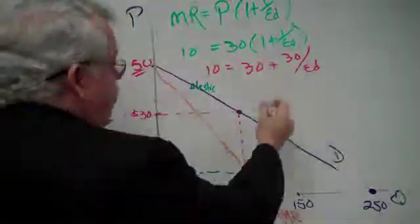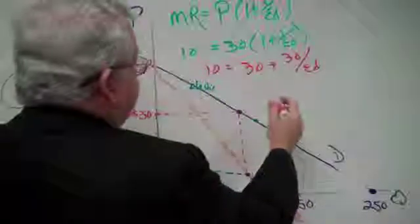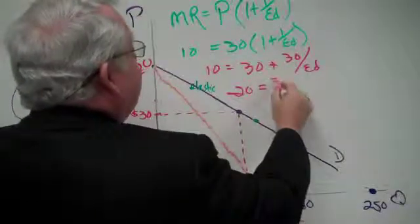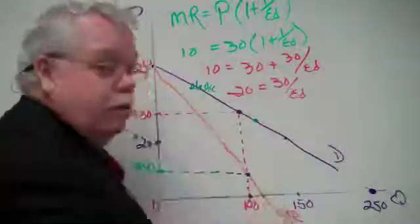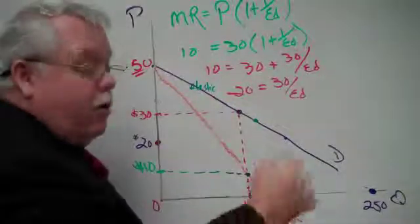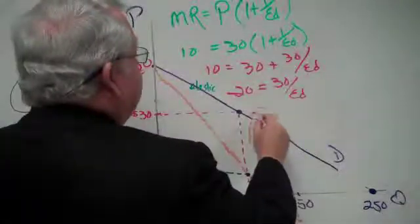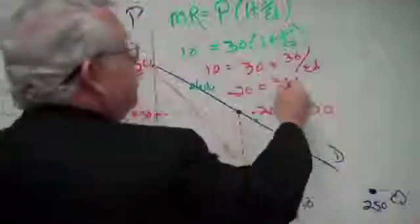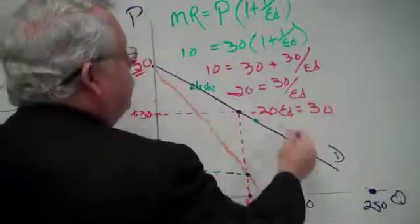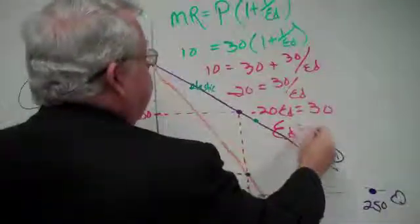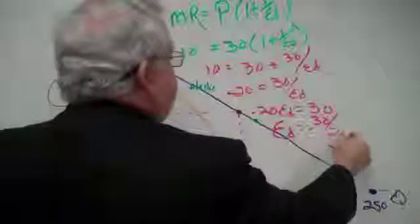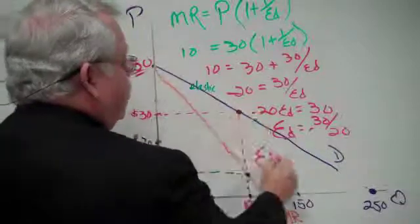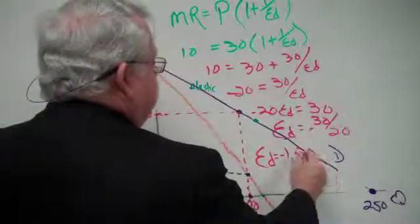Then what? Subtract. What do we want to do? Minus 20 equals 30 over the price elasticity of demand. Multiply both sides through by the price elasticity of demand. Minus 20 times ED equals 30, because multiplying over here cancels. And so the price elasticity of demand is negative 30 over 20, which is what? The price elasticity of demand at this point is negative 1.5.